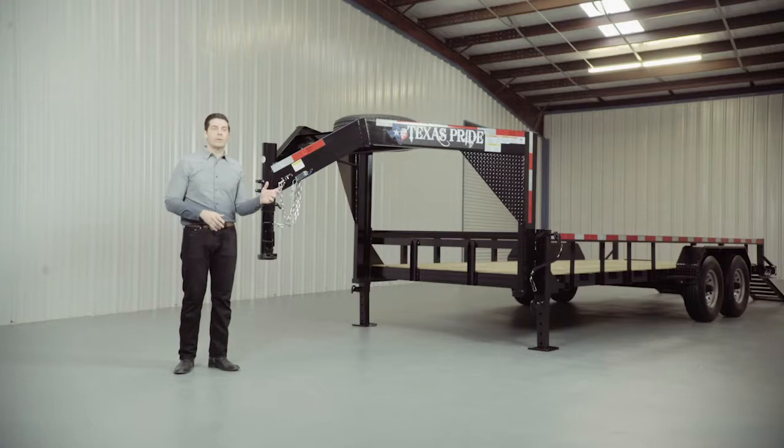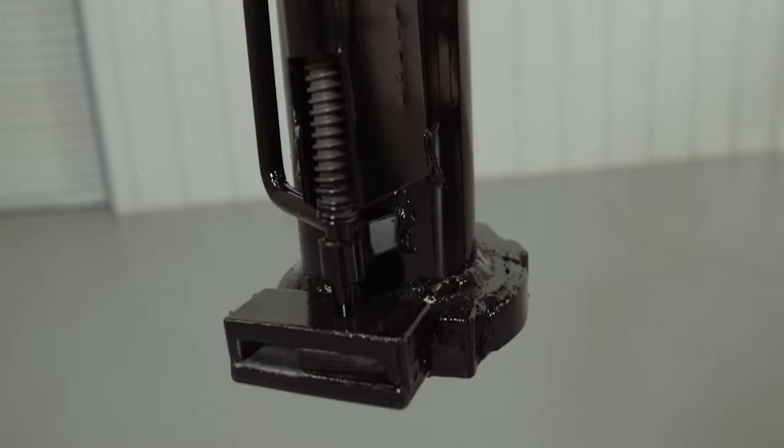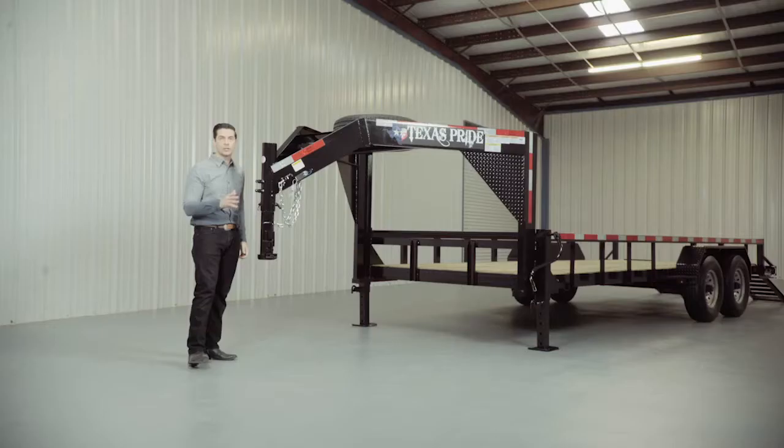Let's start at the front and work our way around to the back. Up front we have a 4 hole adjustable gooseneck coupler that allows you to adjust the coupler height on your trailer to your truck evenly to ensure your trailer is level going down the road.